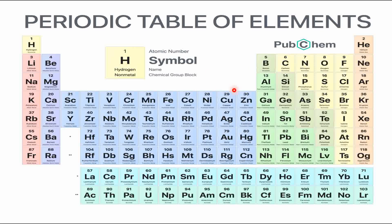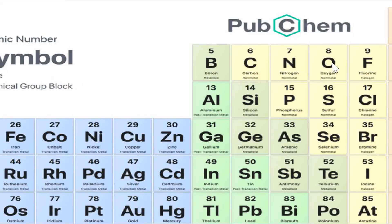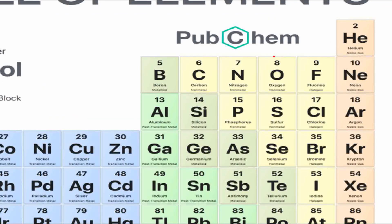Looking at the periodic table, taking the case of oxygen: oxygen's atomic number is 8. By our shortcut method, its mass number will be double, which is 8 plus 8, equal to 16. So 16 is the correct mass number of oxygen — in this case the shortcut is correct.